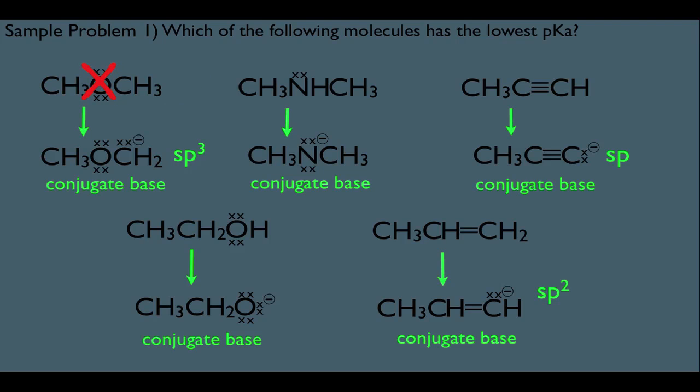So that means out of these three species, this one cannot be the strongest acid, nor can this one, because the conjugate acid with the sp hybridization we know is definitely stronger than these two. This is what I mean by comparing apples to apples, and these are the things we want to look for when we're trying to rule out answers. So let's get rid of these right here.